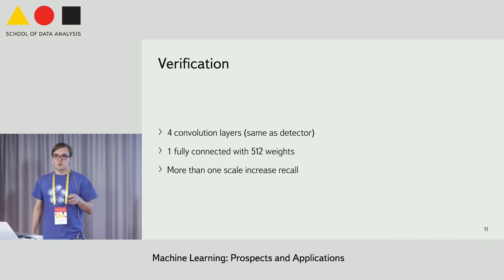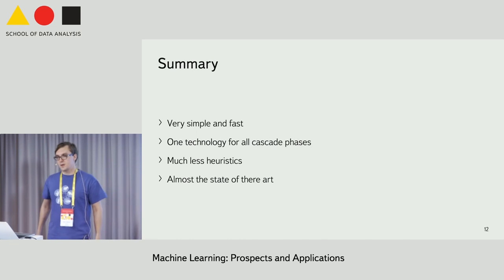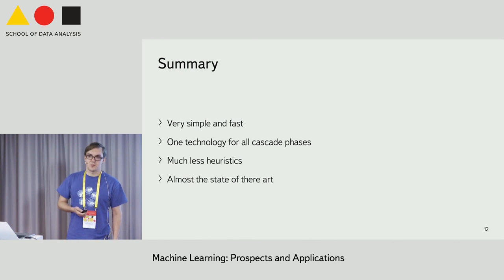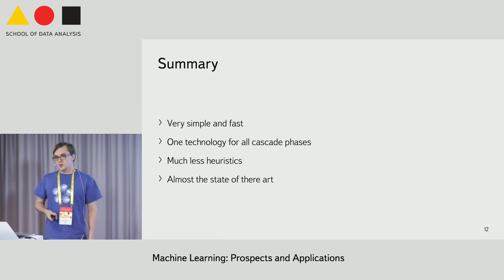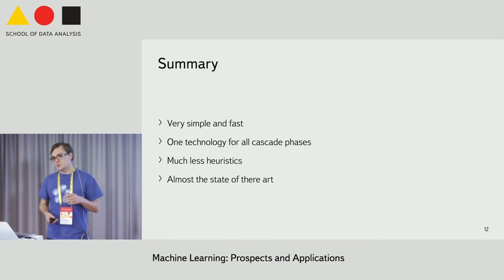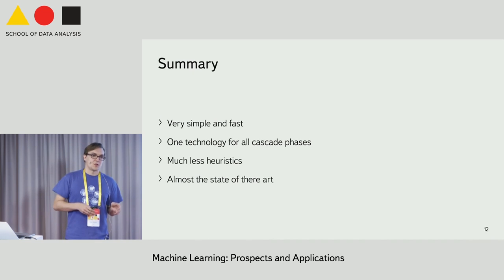We can also use it on more than one scale to increase recall. To summarize, I described a very simple approach to generate proposals. We can use deep learning for every stage of the detector, which is very good for production. We almost achieve state of the art, but use much less heuristics.